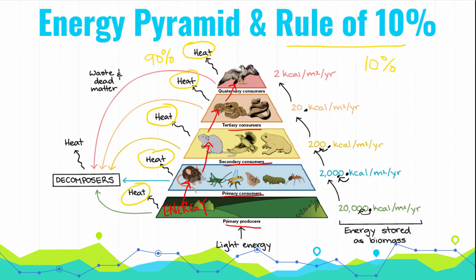I have my decimal point here, I move it over one, I have 2. If I were to go one more level here, I move my 2 over 1, I would have 0.2 kilocalories per meter squared per year at the next level if we kept going. If something ate this hawk on top.